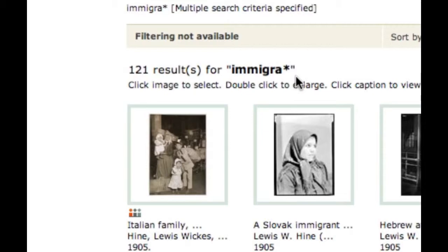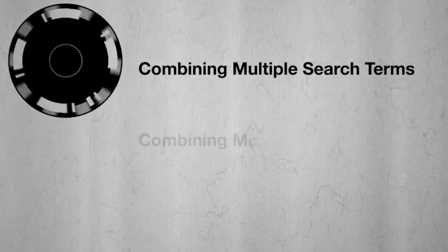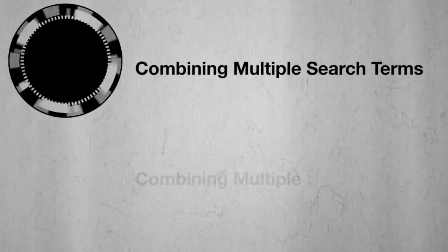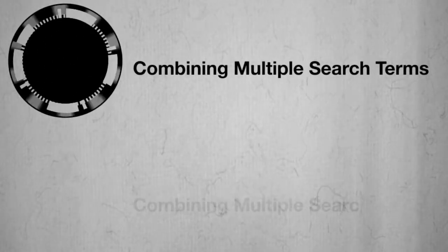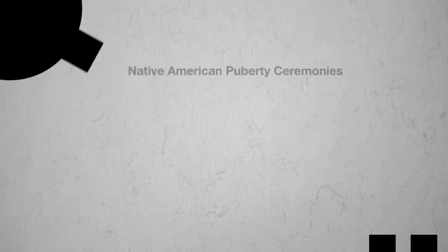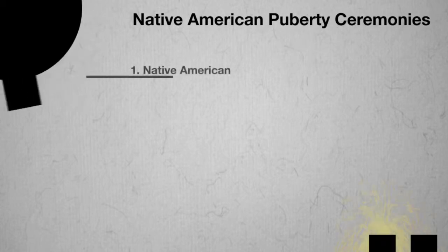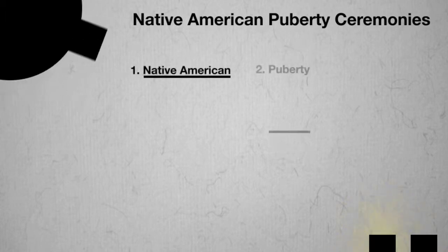Truncation is the second of the three basic search techniques you'll need to search library databases. The third important technique enables you to combine multiple search terms into a single query. In the previous video we showed you how to divide your topic into facets and how to develop a list of search terms for each facet. For the topic 'Native American puberty ceremonies,' we had three facets and three lists of search terms.